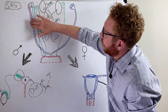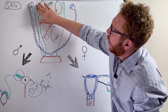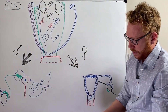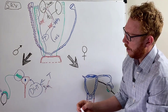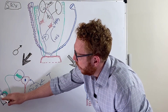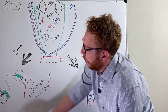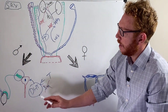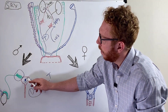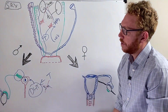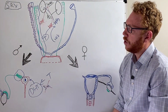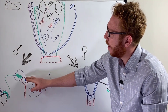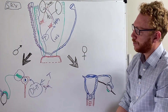The remnants of the Müllerian duct that persist in the male are a small structure in the testes called the appendix testis, and a small remnant in the developing prostate called the prostatic utricle. These are the last remnants of the Müllerian duct in the male.